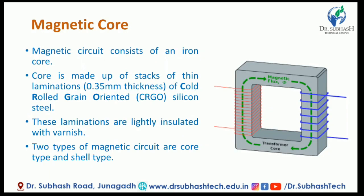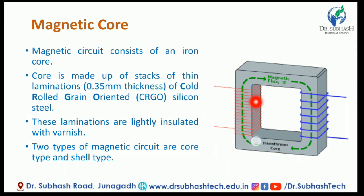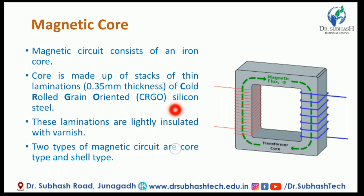The magnetic core — the magnetic circuit consists of an iron core. The iron core is made up of stacks of thin laminations. These are cold rolled grain oriented silicon steel laminations of 0.35mm thickness. The laminations are lightly insulated with varnish.